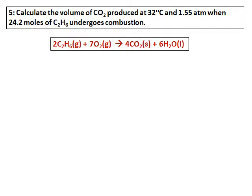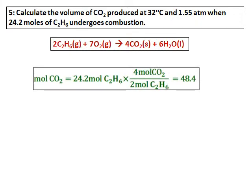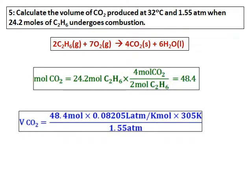Calculate the volume of carbon dioxide produced at 32 degrees Celsius and 1.55 atmospheres when 24.2 moles of C₂H₆ undergoes combustion. The equation is given and is already balanced. Using the equation, convert 24.2 moles of C₂H₆ to moles of carbon dioxide. Once I have the moles of CO₂, use PV = nRT — with moles, R, temperature, and pressure known — to get the volume of carbon dioxide.